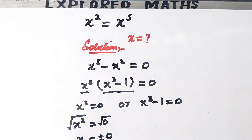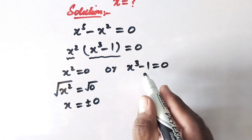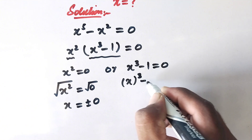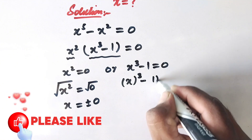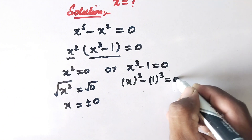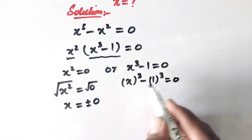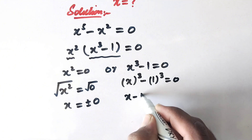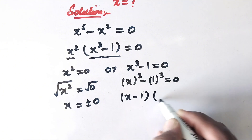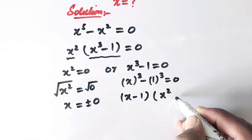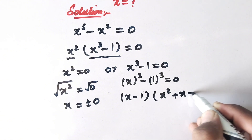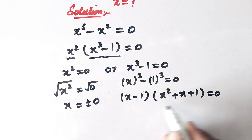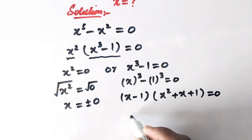And we can write the term x cubed minus 1 in the same way as 1 cubed. Now here we can apply an algebraic identity, that will result in x minus 1 times x squared plus x plus 1 equal to 0.